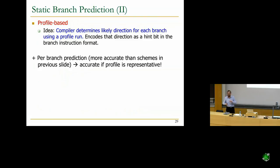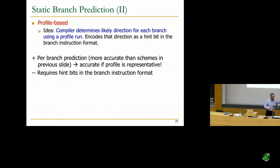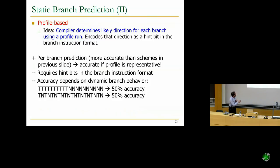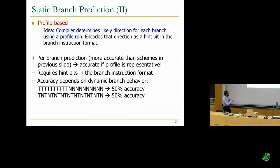Profile-based prediction is more accurate than always-taken or always-not-taken because you distinguish per branch. The downside: accuracy depends on dynamic branch behavior. If a branch alternates taken and not-taken every time, you get 50% accuracy regardless of what the profile says. A simple dynamic predictor could handle that pattern easily. That's the fundamental downside of static mechanisms — they cannot adapt to dynamic changes in branch behavior.